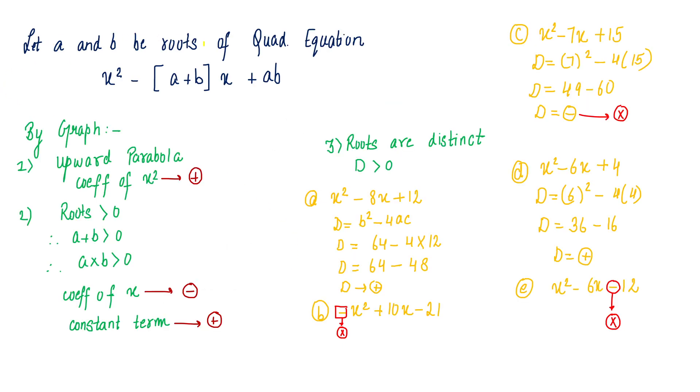Let a and b be the roots of a quadratic equation. If a and b roots are given to us, we can write a quadratic equation by this format: x squared minus sum of the roots into x plus product of the roots.